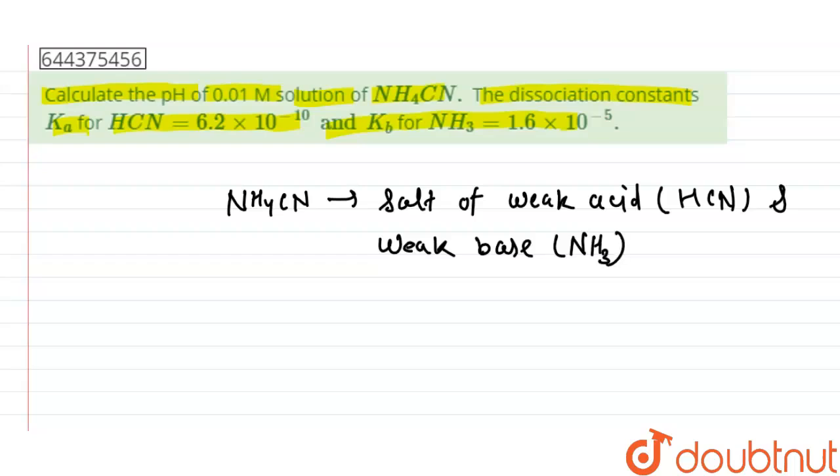And the pH of this type of salt is given as pH equals 7 plus half pKa minus pKb.